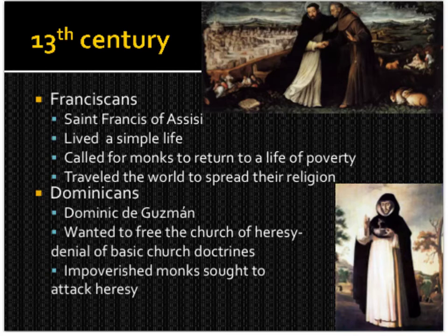In the 13th century, there were two other new religious orders: the Franciscans and the Dominicans. The most famous Franciscan was Saint Francis of Assisi — they advocated living a simple life, returning monks to a life of poverty, and traveled the world to spread their religion. The most famous Dominican was Dominic de Guzmán — they wanted to free the church of heresy, which is the denial of basic church doctrines, and also believed in living a poor and simple life.